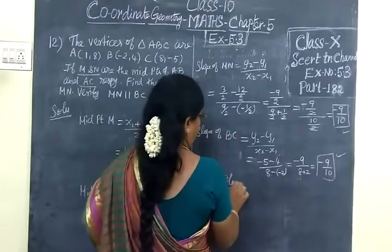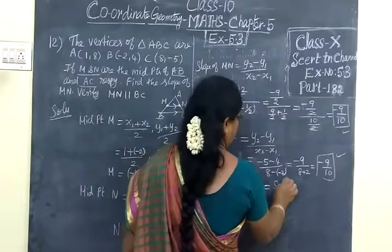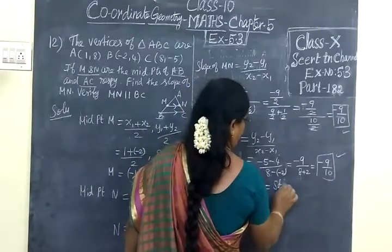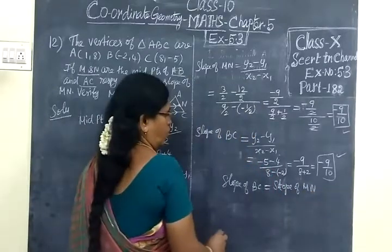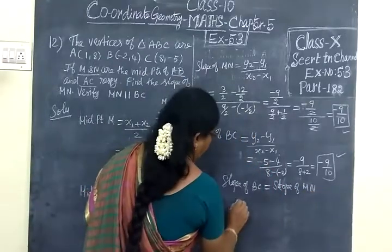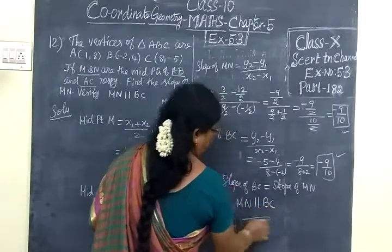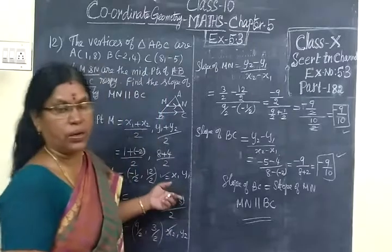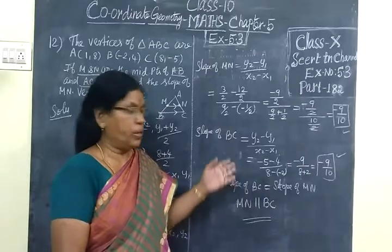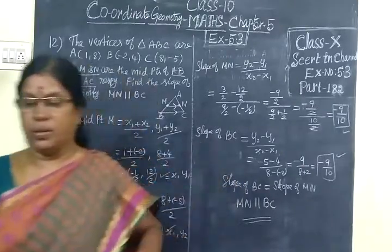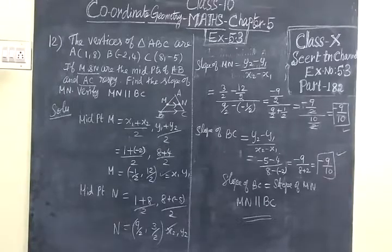Therefore, slope of BC equals slope of MN. Since the slopes are equal, they are parallel. Hence, MN is parallel to BC. This is a very simple question and it comes as a 5-mark question many times. So please go through this question. Thank you.